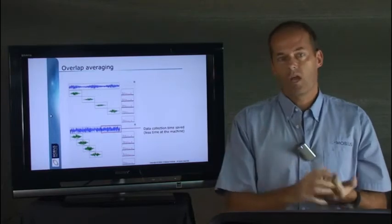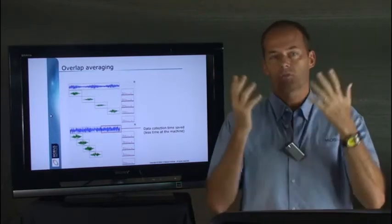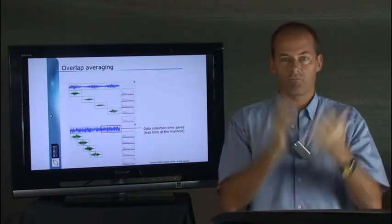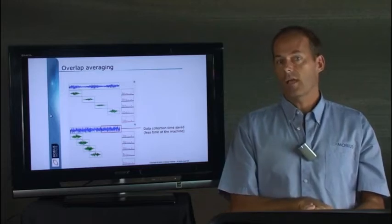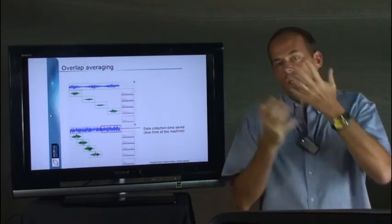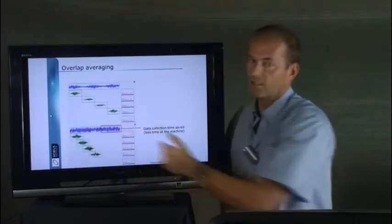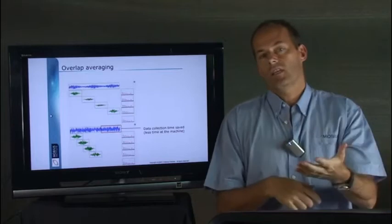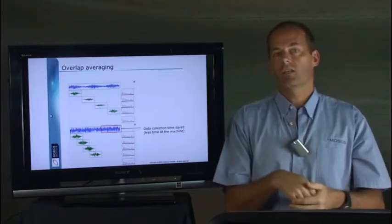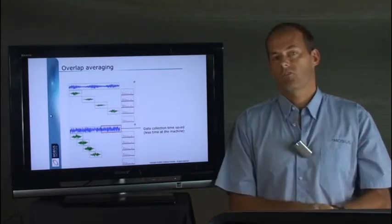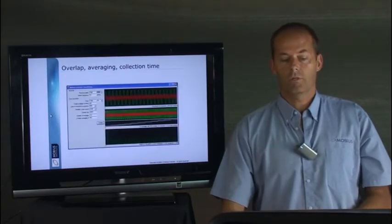So yeah, you can turn on overlap averaging, you can crank it up to a high percentage, you know, 67% or a value like that. But remember that you're getting legitimate data, but you may not be listening to the machine long enough. Now if you look at the other quick presentations on averaging and how to select the number of averages, you'll see why this is important to make sure you do it properly.